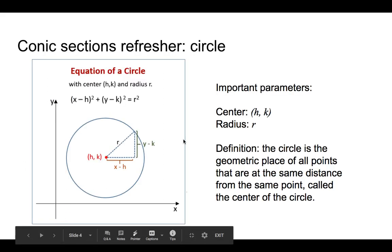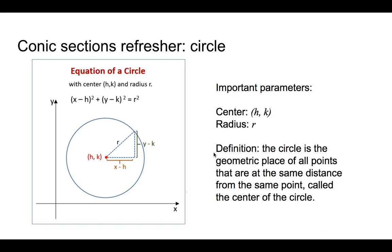So here I have put the important parameters of each one of the conic sections and the definition. Try to read it. I'm just going to focus now on describing the shape, maybe one or two points and the equation. Also, I'm assuming that you already know this because we've seen this before, we saw this last year.